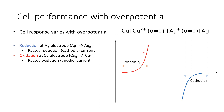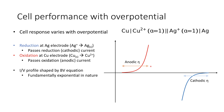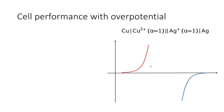The current-voltage profile is shaped fundamentally by the Butler-Volmer equation, so the shapes of these curves are exponential in nature. Remember, this is a galvanic cell, so the passing of current is spontaneous — it's a spontaneous process as this cell strives to reach equilibrium.